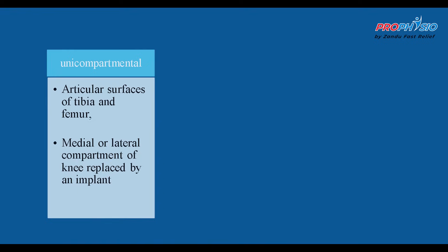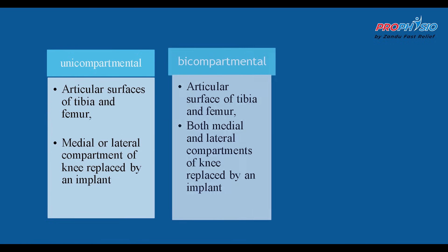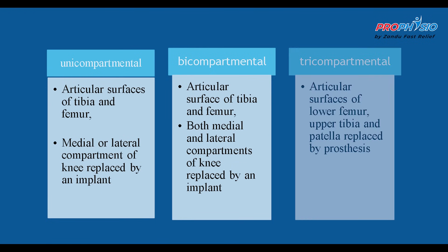The first type of TKR is unicompartmental TKR, where the articular surface of the tibia and femur in the medial or lateral compartment of the knee is replaced by an implant. The second type is bicompartmental TKR, where both medial and lateral compartments are replaced. The third type is tricompartmental TKR, where the articular surface of the lower femur, upper tibia, and patella are replaced by a prosthesis.